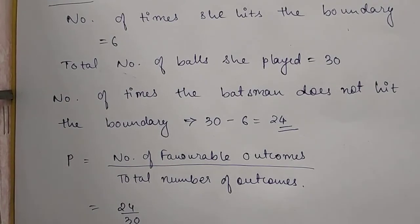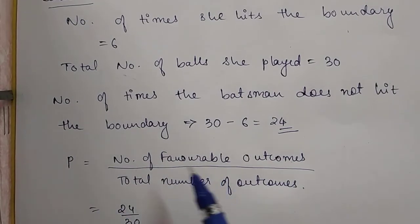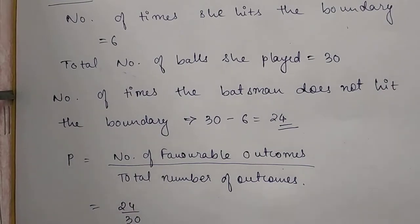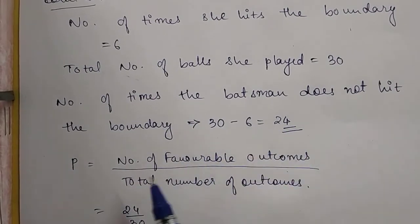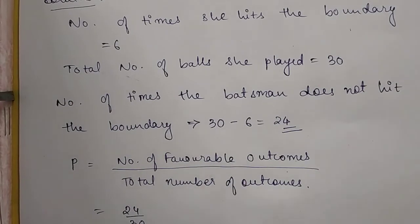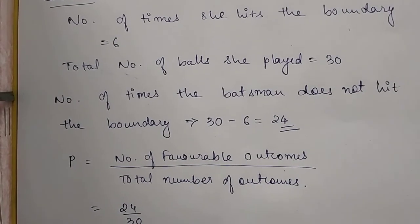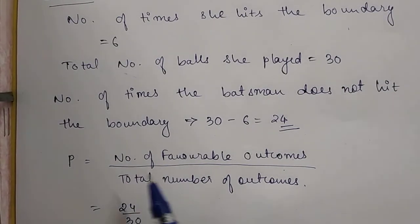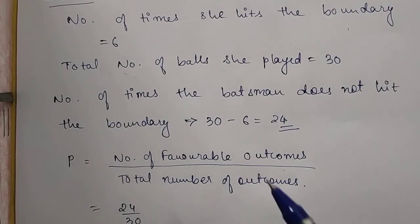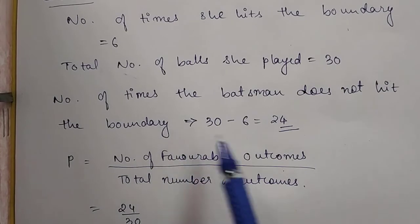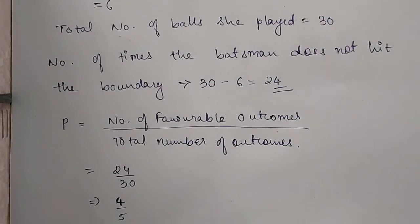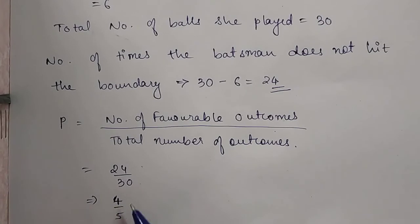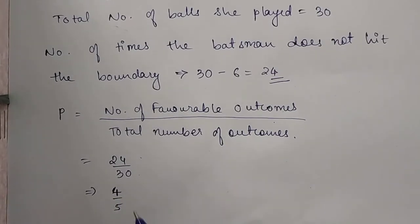This is a fixed formula which mathematicians have experimented and proved: probability depends on what outcome we need and how many total outcomes there are. The formula is always: number of favorable outcomes divided by total number of outcomes. Our question asks about 'does not hit the boundary', which is 24 favorable outcomes out of 30 total outcomes. So the answer is 24 upon 30, which simplifies to 4 upon 5.